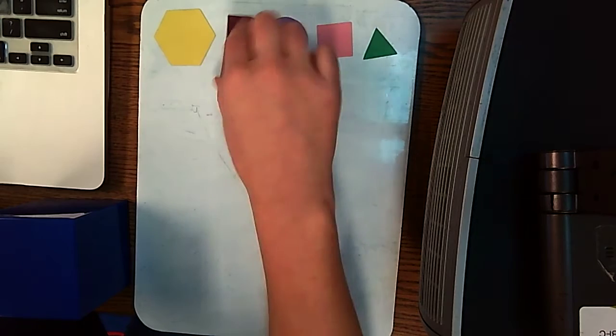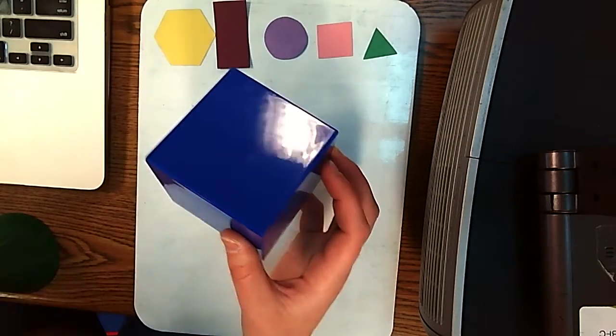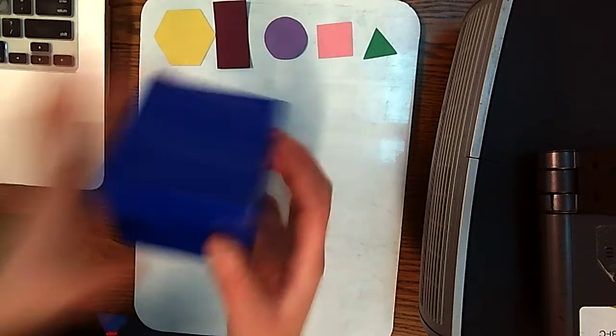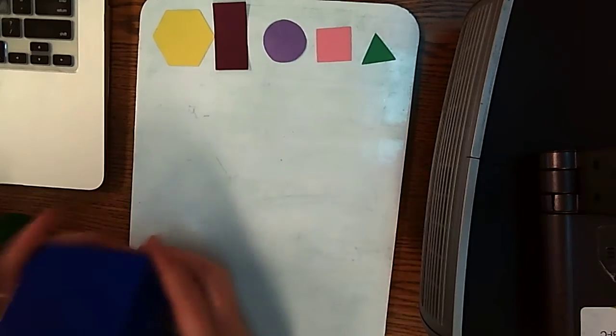Our 2D shapes are flat. That is something that is different from three-dimensional shapes because 3D shapes are solid, 2D shapes are flat. Alright, so let's review our 3D shapes that we've been learning about.